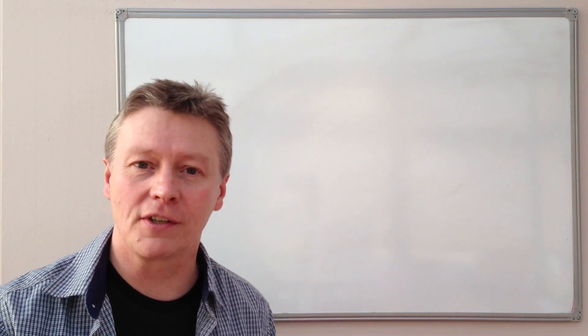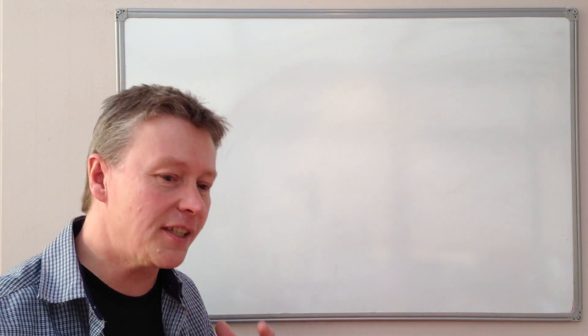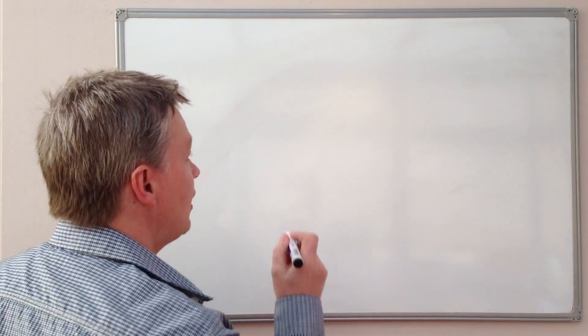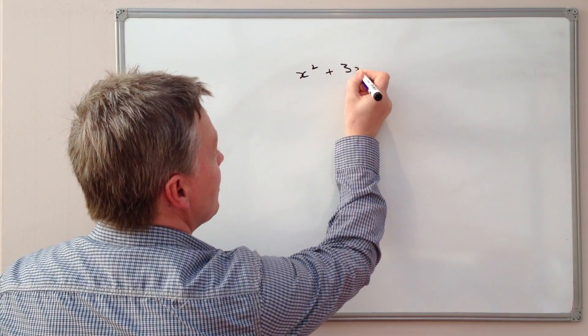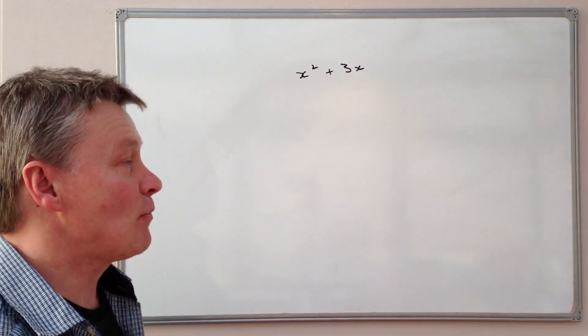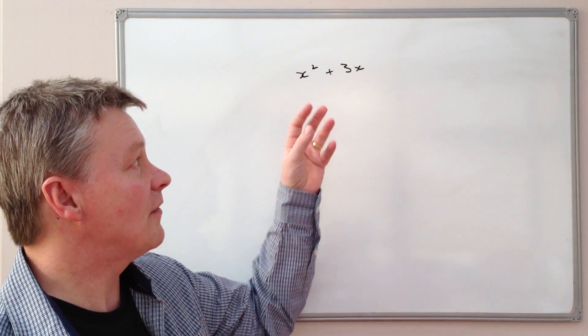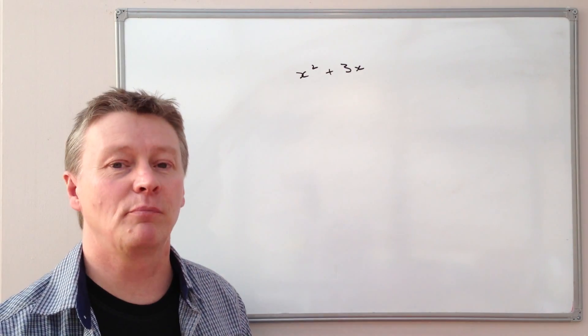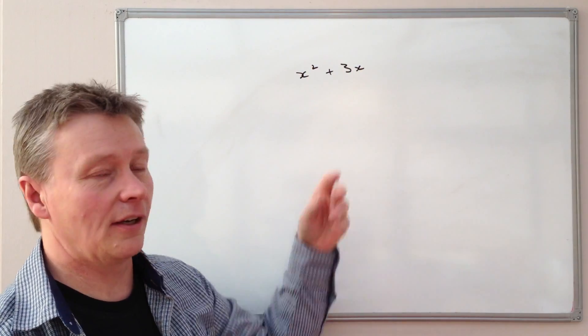So factorising an expression would look something like this. So it would be a fairly typical question, would be factorise fully x squared plus 3x. So that's a relatively straightforward expression. What they want us to do is to take the largest factor possible out of this term and this term.